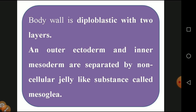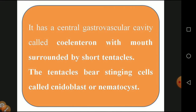The body wall is diploblastic with two layers: the presence of ectoderm and endoderm. The outer ectoderm and inner endoderm are separated by a non-cellular jelly-like substance called mesoglea. This is similar to an egg — the outer shell, the inner yolk, and the white fluid surrounding it. They have a central gastrovascular cavity called coelenteron, with a mouth surrounded by short tentacles.